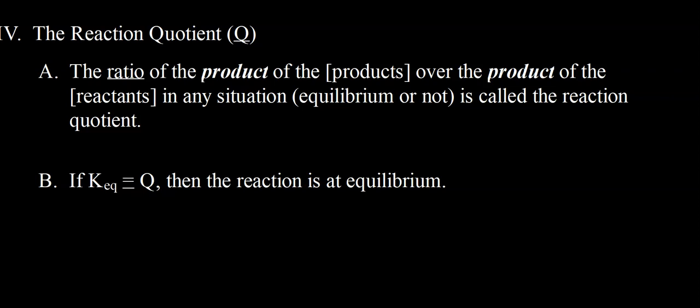The reaction quotient is just like K, except K, the equilibrium constant, we calculate using equilibrium concentrations. Q, we calculate the same way as K, but we don't necessarily use equilibrium concentrations. So maybe we're given initial concentrations. We can plug that into our Q expression, as you'll see in a bit. It looks just like the K expression, and then we can calculate Q and go from there.